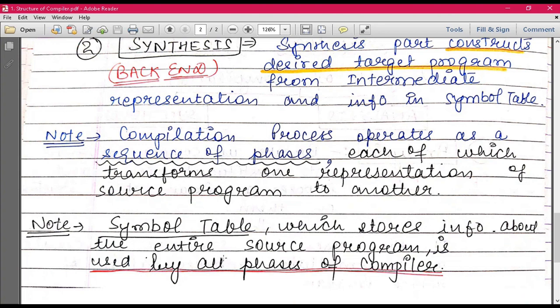Symbol table, which stores information about the entire source program, is used by all the phases of compiler. And the important thing is that the symbol table, the data structure that I am talking to you, in which we store our code-related information, all the phases of your compiler, all the phases of compiler use.